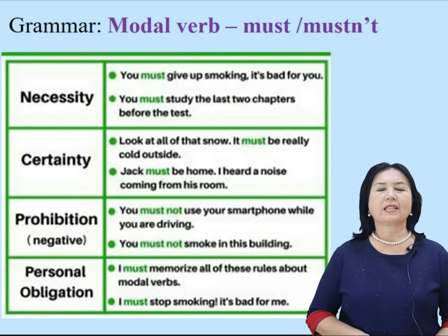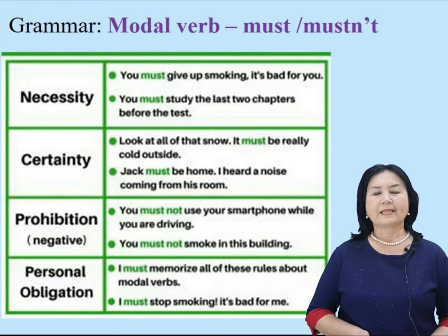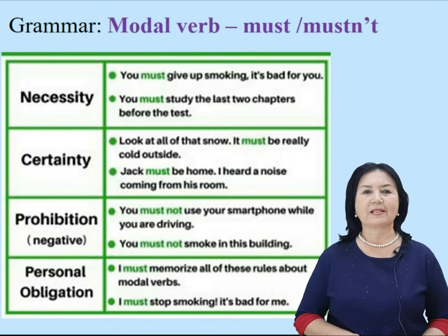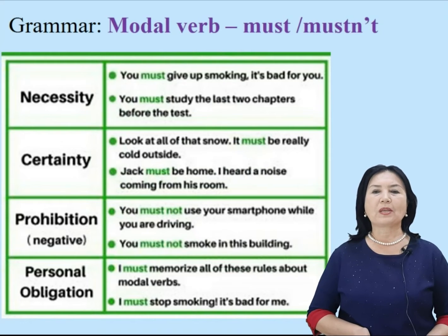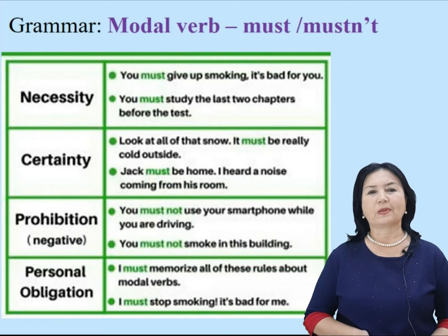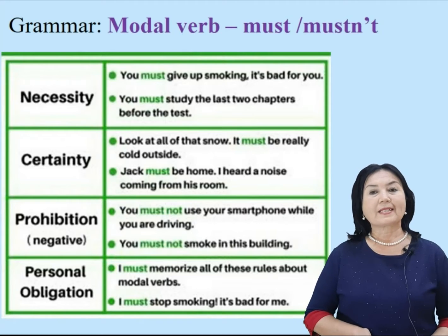This grammar slide is devoted to modal verb must and mustn't. Must is commonly used to express necessity and certainty, and mustn't to express prohibition and strong recommendation. Now, look through some examples. You must give up smoking — it's bad for you. This is necessity. You mustn't use your mobile phone while you are driving — that is prohibition. Personal obligation: you must stay at home, you have high temperature.